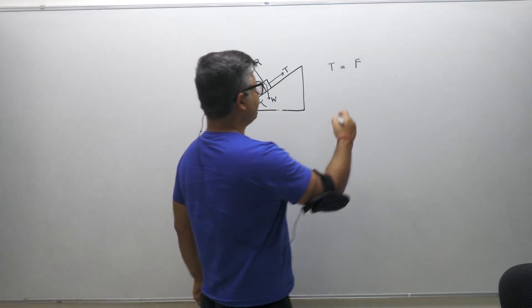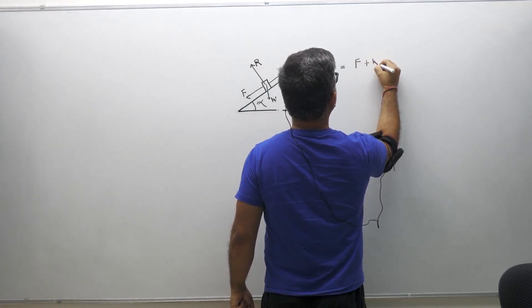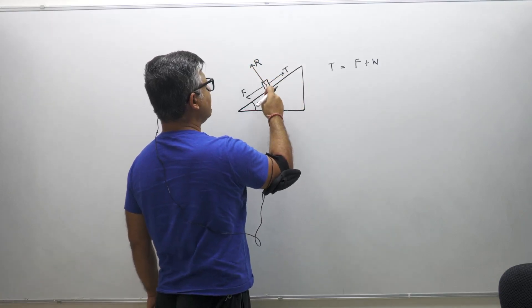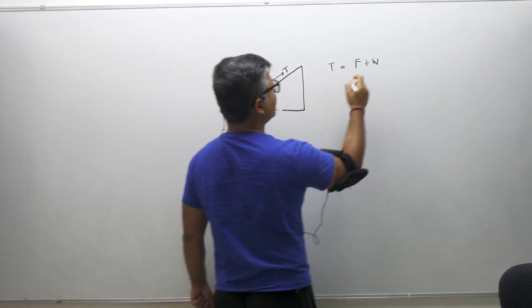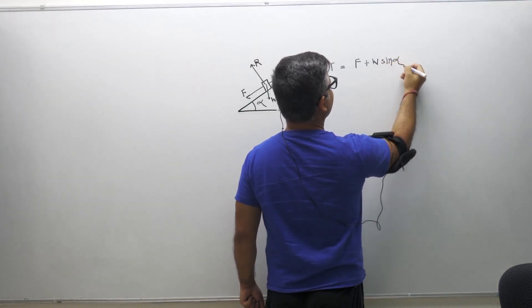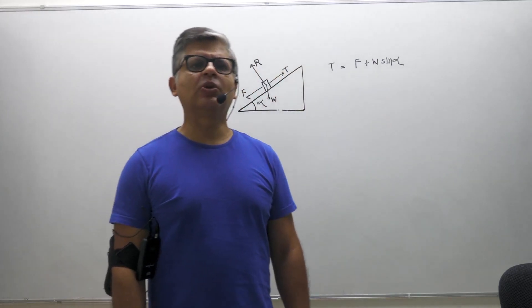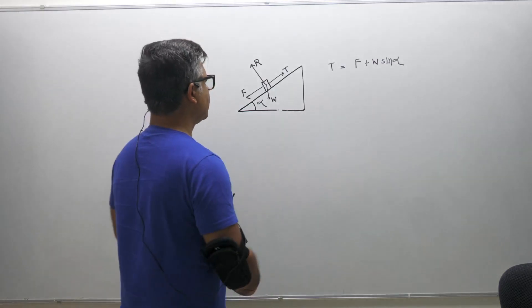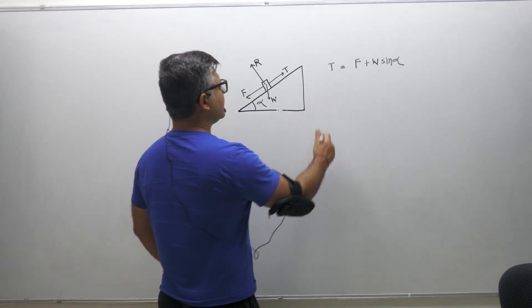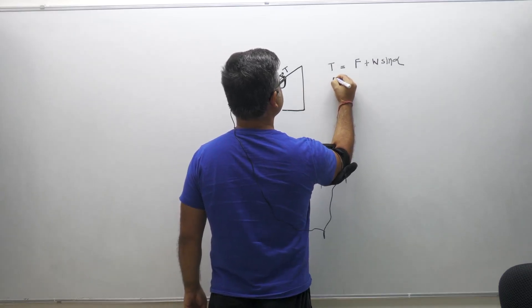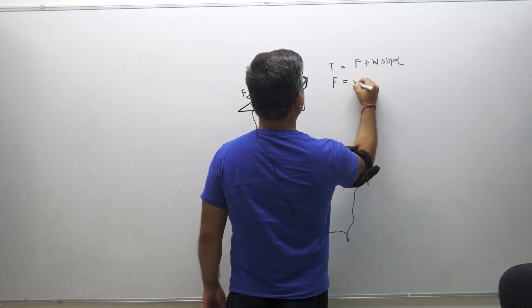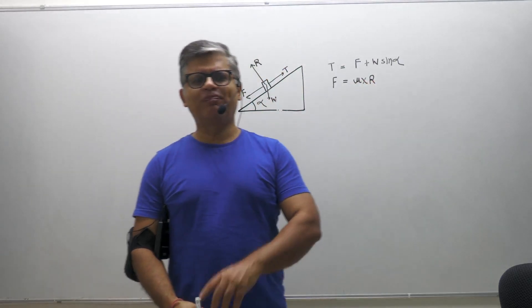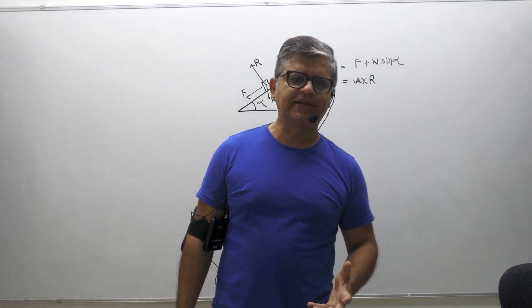Tension equals friction F plus W sin α. This is the component of weight along the incline. The force of friction can be written as μR, where μ is the coefficient of friction and R is the normal reaction. These are the two basic equations you need for this body to be in equilibrium.